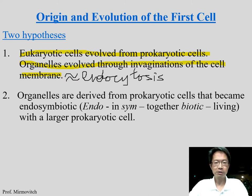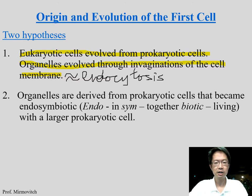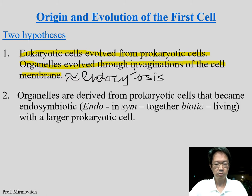Remember we talked about pinocytosis — the cell drinking water — and receptor-mediated endocytosis, phagocytosis, which is engulfing foreign material. All these types of endocytosis cause an invagination of the cell membrane to form a vesicle. In the primitive cell, these vesicles become organelles. The other hypothesis is called endosymbiotic — endo means inside, sym means together, biotic means living.